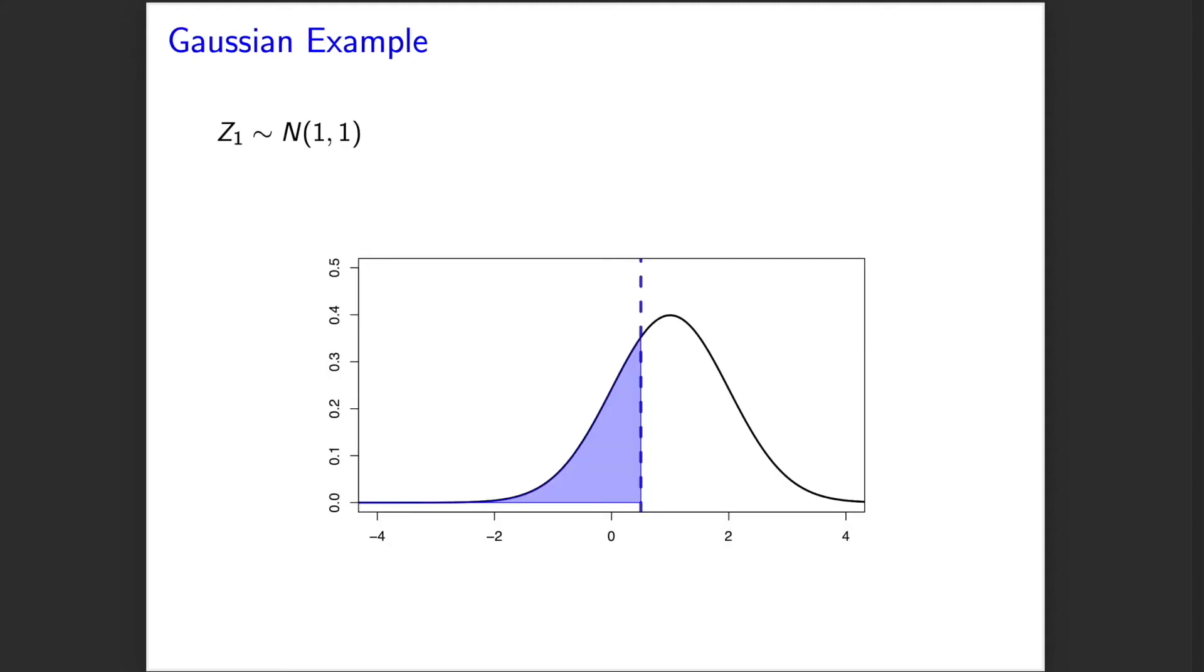Here we have a dotted blue vertical line that hits 0.5 on the x-axis, and shaded in blue, we have a graphical representation of the probability that the first element of our sequence is less than or equal to 0.5. As we move through the elements of our sequence, we see that as the density appears to stabilize, so too does this probability.